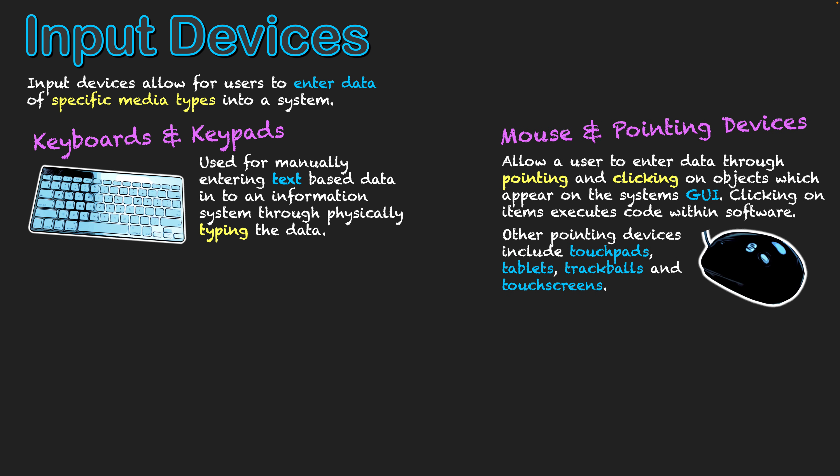The next one is the mouse, as well as other types of pointing devices. They allow a user to enter data through pointing and clicking on objects which appear in the system's GUI — its graphical user interface. So I point at something, and once I click on it, an operation occurs based on the coding existing behind the scenes within that specific software. If I want to open an application, I put my mouse cursor on Microsoft PowerPoint, double click on it, and the operating system executes Microsoft PowerPoint, which then opens up the software.